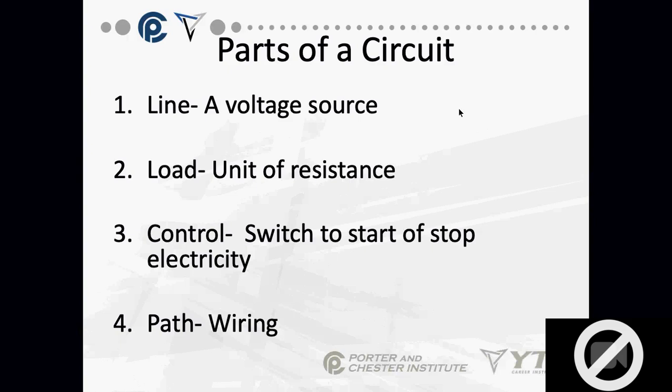We have four parts of a circuit: line, load, control, and path — the wiring. If any one of these parts is missing, the circuit won't work. Line, load, control, and path — any one missing, the circuit will not work.